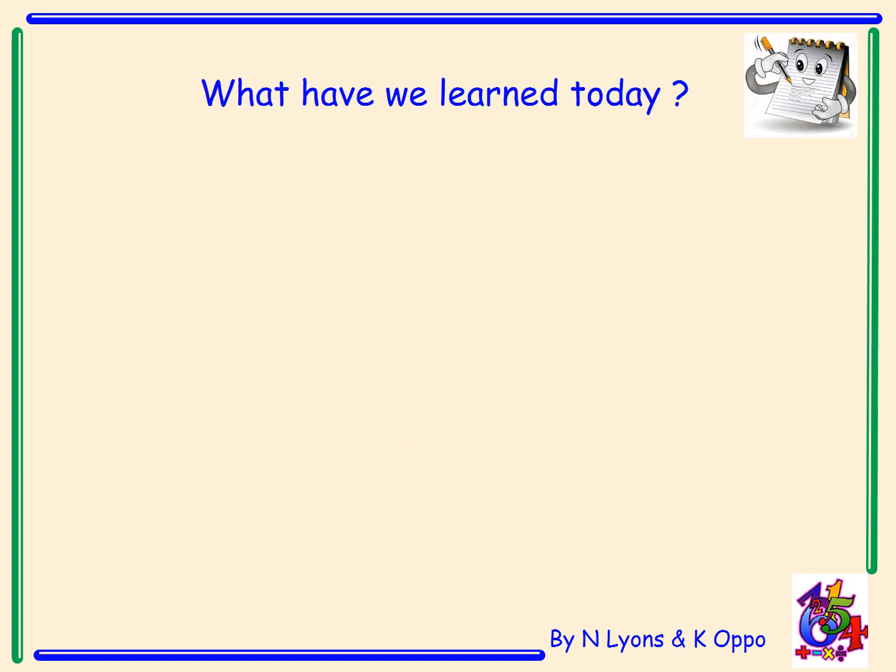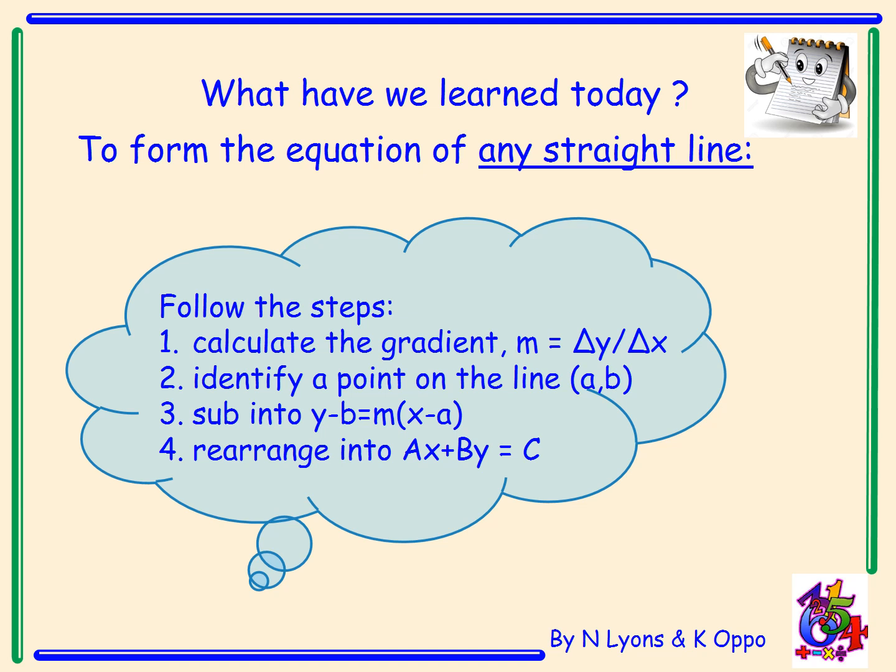So what have we learned today? Can you please take this note into your jotter? Again, you see the note taking symbol at the top of the page. To form the equation of any straight line, you can follow the following steps. Step one: calculate the gradient m, which equals delta y over delta x—that's the change in the vertical divided by the change in the horizontal. Step two: identify a point on the line a, b, and then substitute into the equation y minus b equals m(x minus a). And our final step was to rearrange this into the form ax plus by equals c.